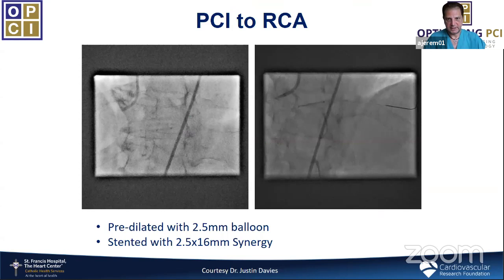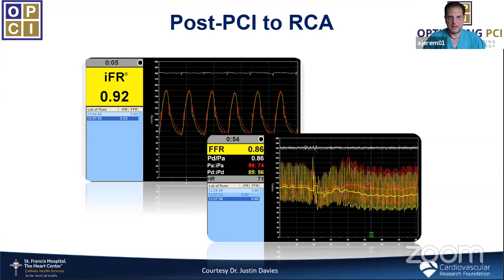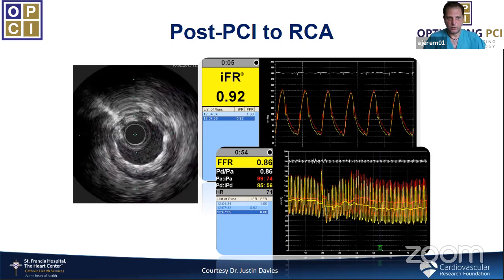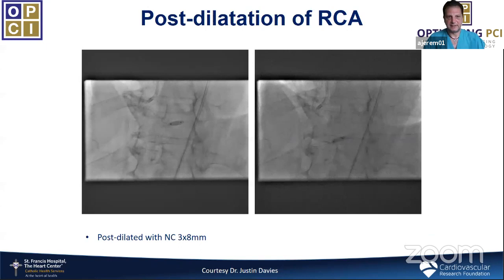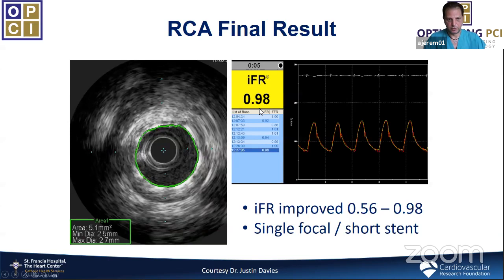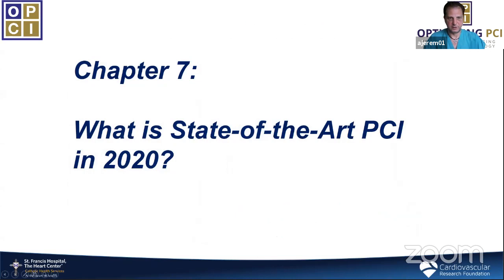A case of iFR-guided PCI with diffuse disease in the RCA including the distal bifurcation and RPL: iFR was very low distally at 0.56, but wire pullback showed it returned to normal 0.98 with just a short lesion in the RPL — all the diffuse RCA disease was not hemodynamically significant. A stent was placed in the RPL; predicted post-PCI iFR was 0.98. Actual post-PCI iFR was 0.92 — imaging showed stent underexpansion. After post-dilation with a larger balloon, iFR was exactly as predicted: 0.98.